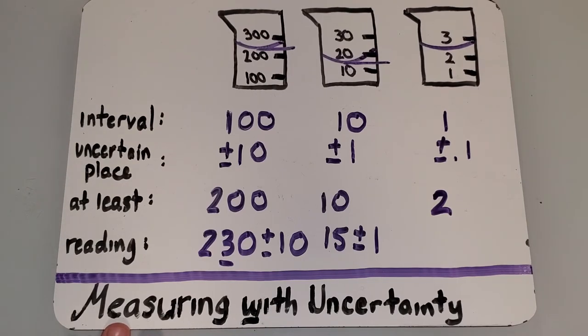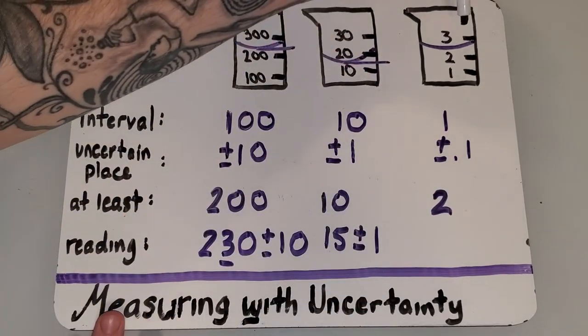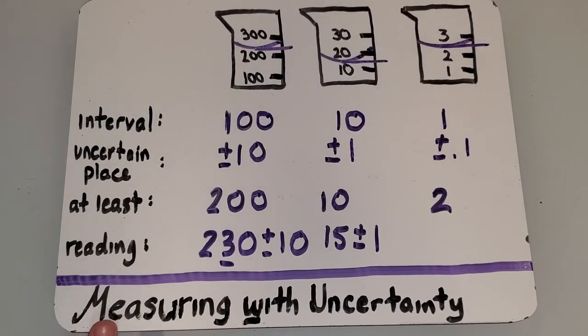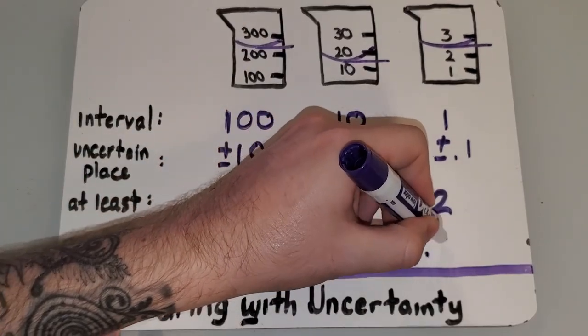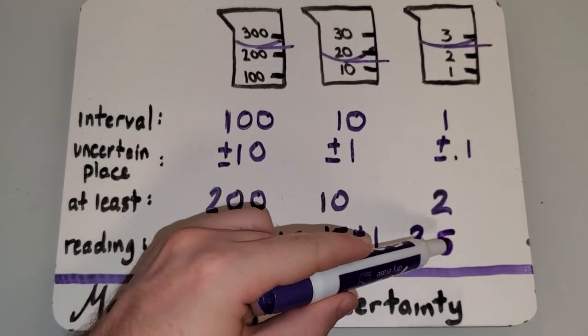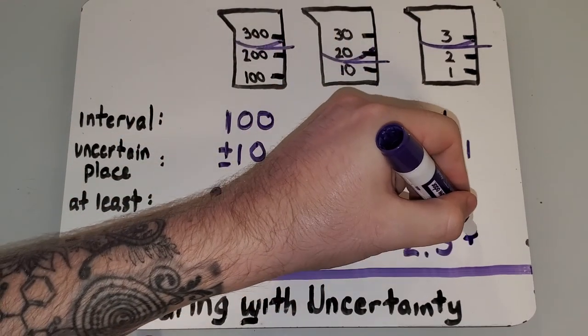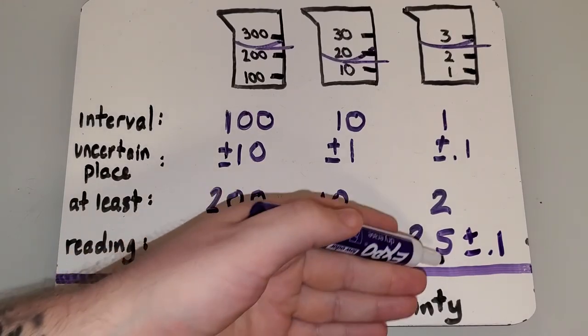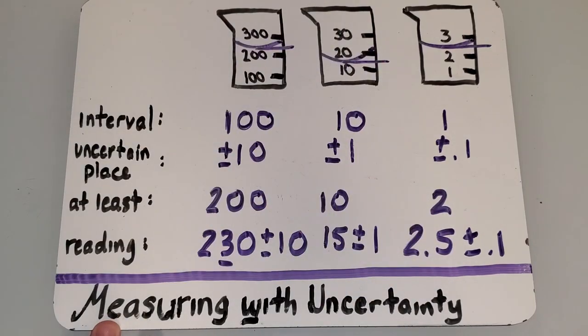And now, we need to start estimating one place smaller than this two. So, in the tenths. Let's draw a line across and see if we can see something here. This also looks to be about halfway between three and two. So, I'm going to say it's 2.5. But, I'm not really sure about that 0.5. I'm only sure about the two. So, in my uncertainty, I'm going to indicate that I'm uncertain about that 0.5 by telling you, it could be between 2.4 and 2.6. That's my estimation.